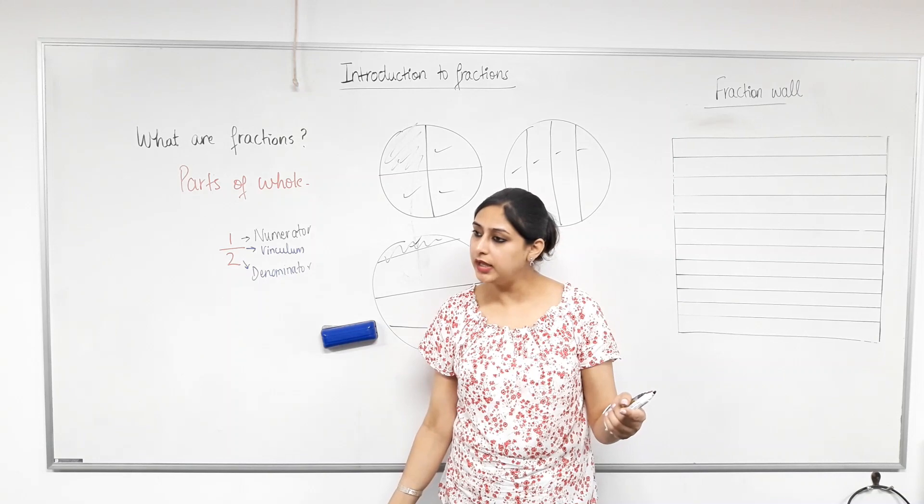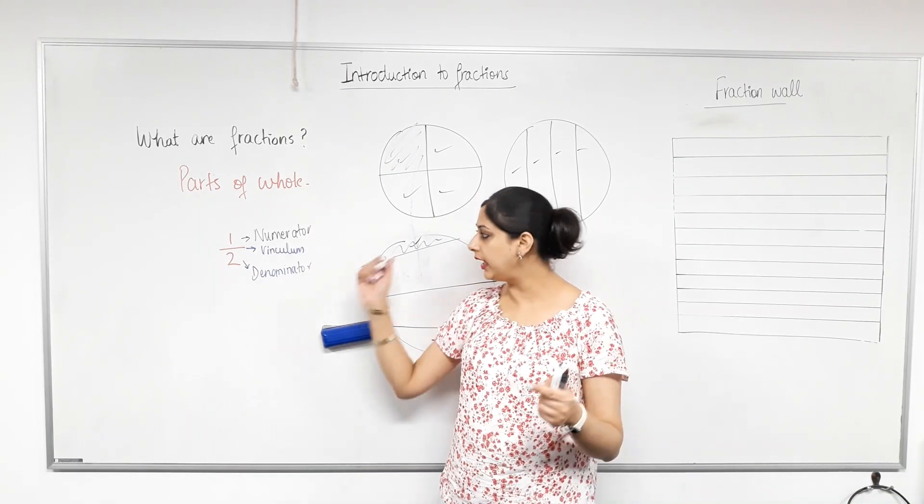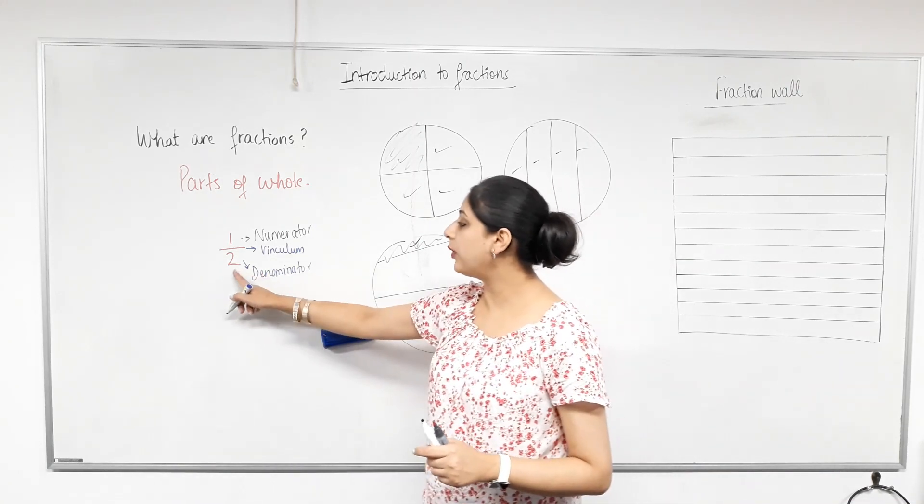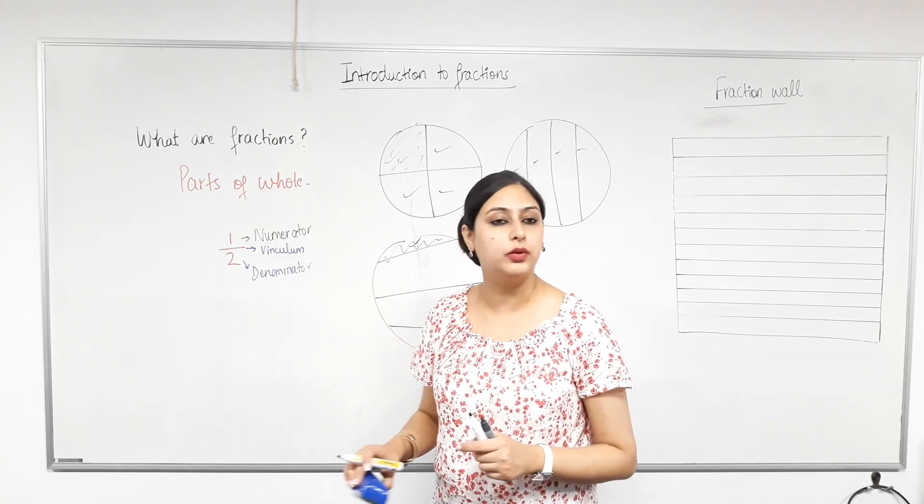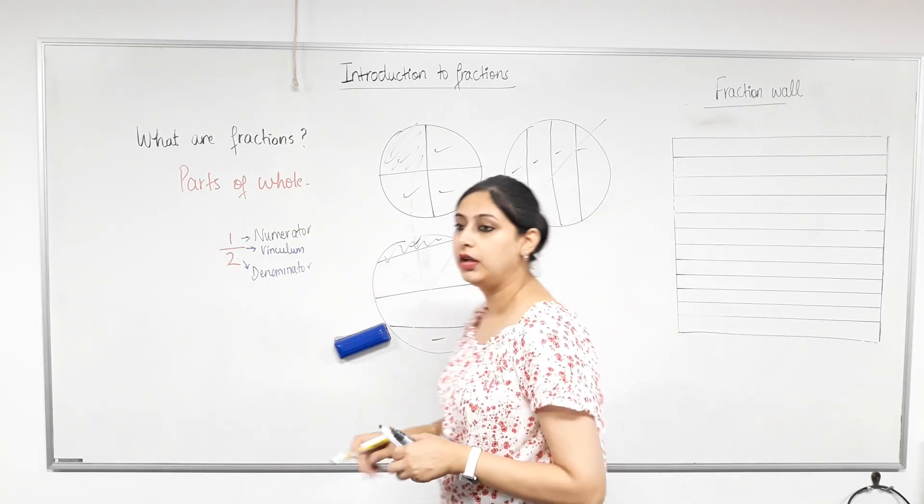Because the parts are not equal. So are we all happy with that? Yes. So the number of parts must be? Equal. Equal. Otherwise, you will hate the person who cut your pizza, don't you? Don't you? Yes. Now, so what does this bottom number represent? The number of equal parts.